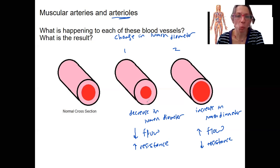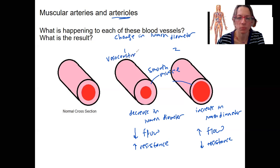One last thing here: why does this happen? How did this happen? Well, smooth muscle - we've got smooth muscle in the tunica media, and that smooth muscle contracts or dilates. So this here, number one, is called vasoconstriction. This is called vasodilation.